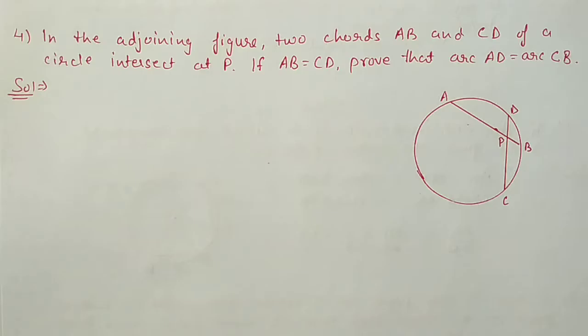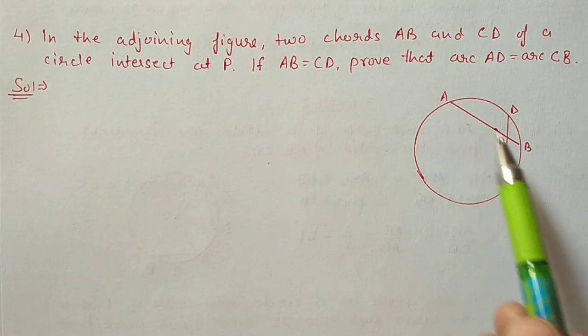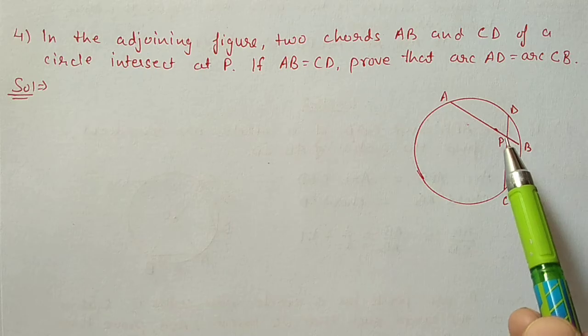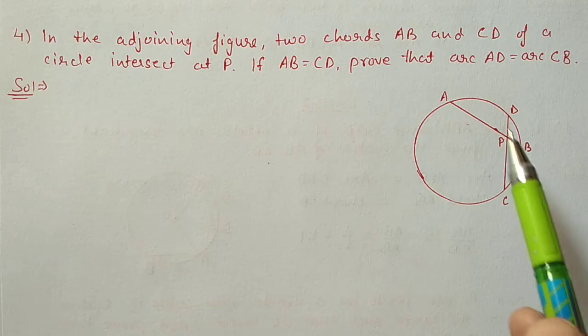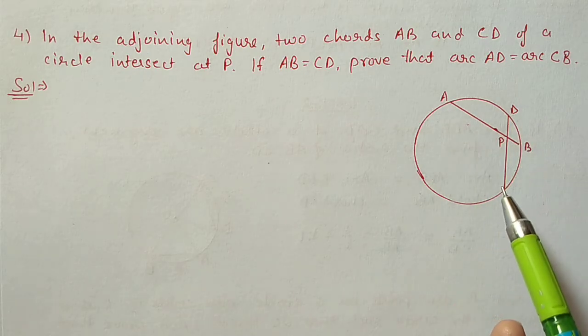Next we have question number 4. In the adjoining figure, two chords AB and CD of a circle intersect at a point. If AB and CD are equal, prove that arc AD equals arc CB. The figure shows two chords AB and CD which intersect, and we have to prove these two arcs are equal.